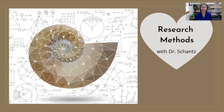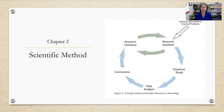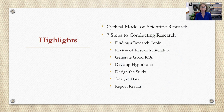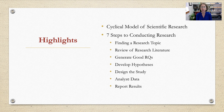Hi class. Welcome to Research Methods. We're doing our highlights for Chapter 2, which is about an overview of the scientific method — basically looking at this cyclical process that we use for doing research in psychological science. The highlights today are that model and the seven steps of conducting research. Consider this an overview, and we'll go into more detail as we get into the corresponding chapters.